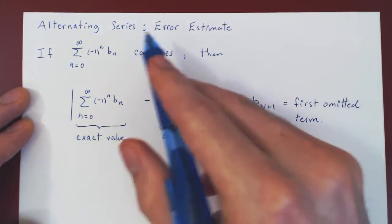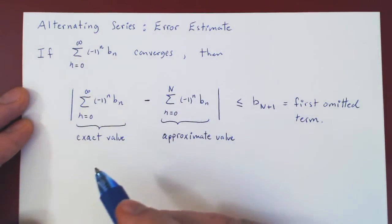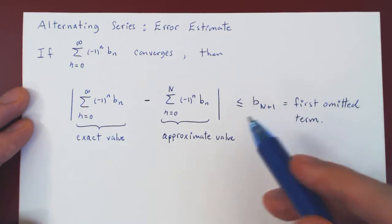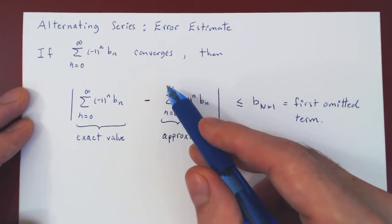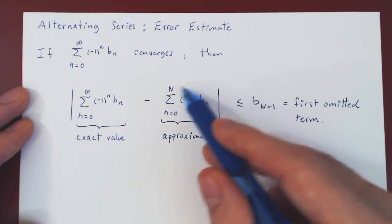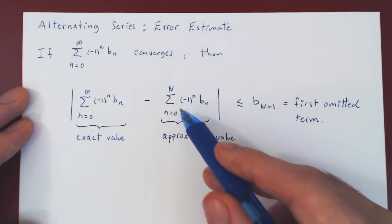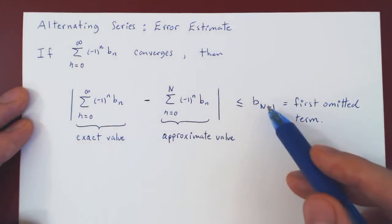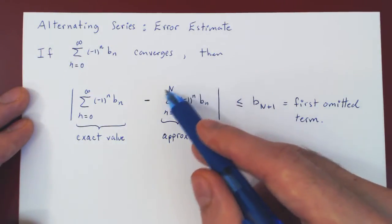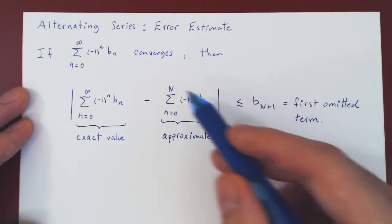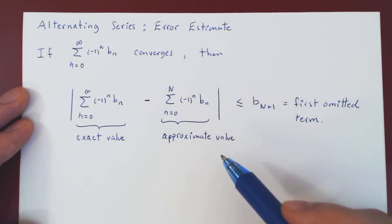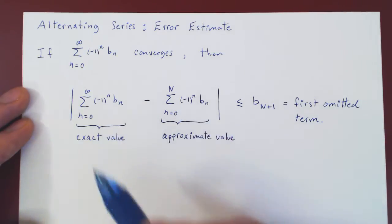And that is the error estimate in the case of alternating series. Such a beautiful and simple result. And we know that as we sum more and more terms, our approximation will become better and better, because the series converges. We know the sequence bn shrinks to 0 as n tends to infinity. So the more terms we are adding, the smaller the error, and so the better our approximation.